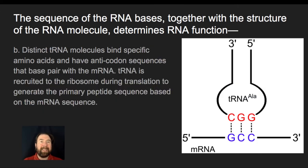So we know that distinct tRNA molecules bind to specific amino acids that have an anticodon sequence that base pairs with the mRNA, and the tRNA is recruited to the ribosome during translation to generate the primary structure of the sequence based off of the messenger RNA.